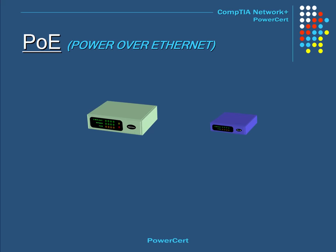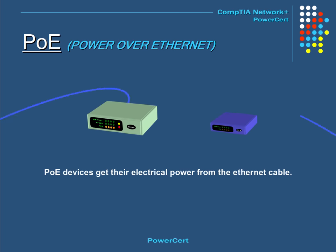Networking devices need electrical power to function and typically have a separate electrical port for a power plug. But some networking devices don't have an electrical port — they get their power and data from the same cable through the Ethernet cable. This technology is known as PoE, which stands for Power over Ethernet.